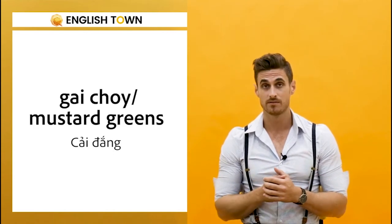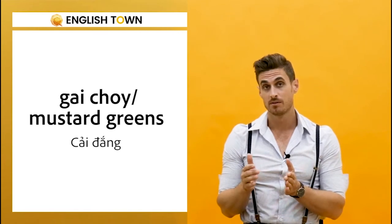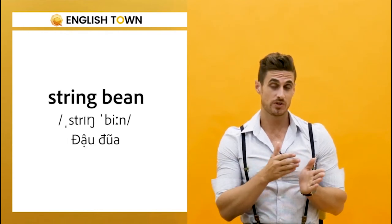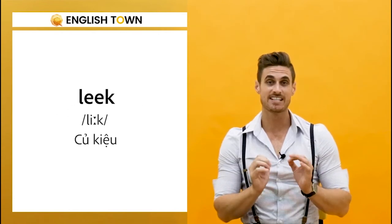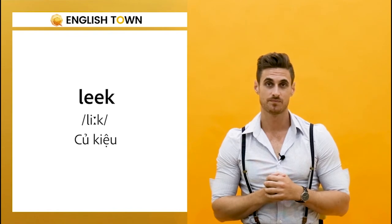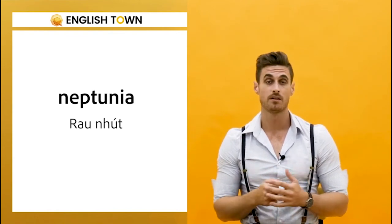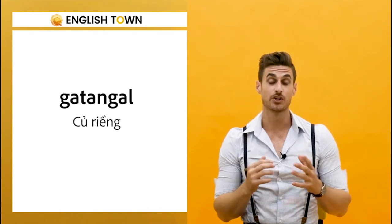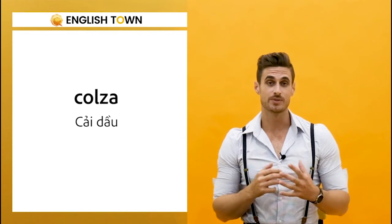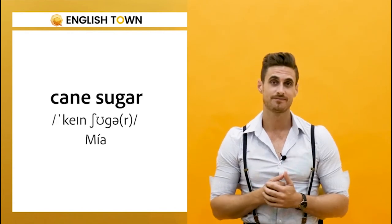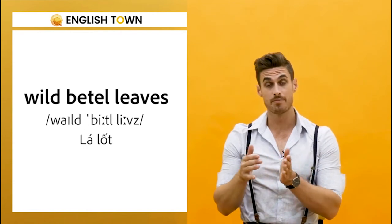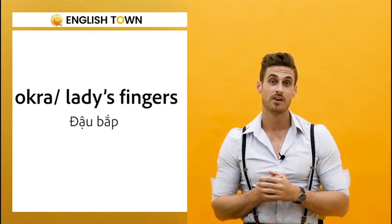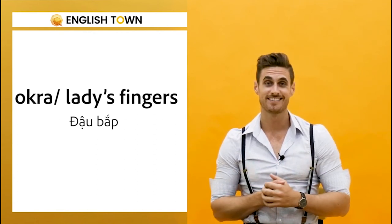Zai choy. Mustard green. Seaweed. String bean. Leek. Neptunia. Shallot. Gadigal. Colza. Cane sugar. Wild betel leaves. Okra, or lady's finger. Perilla leaf.